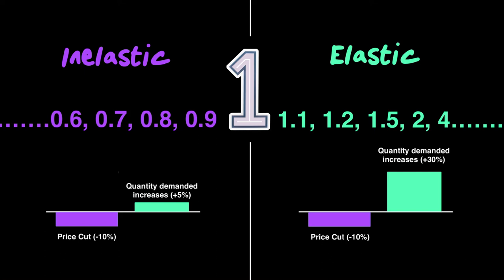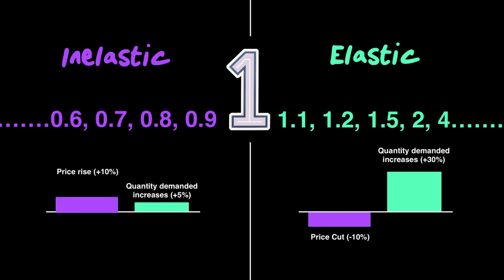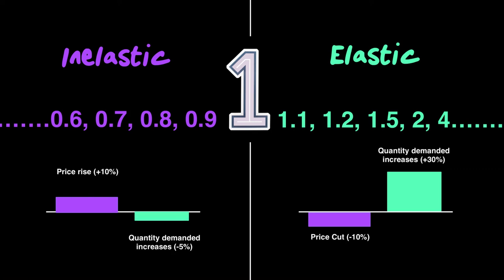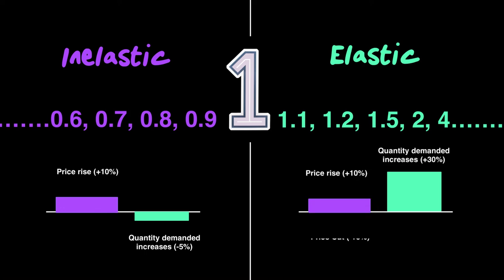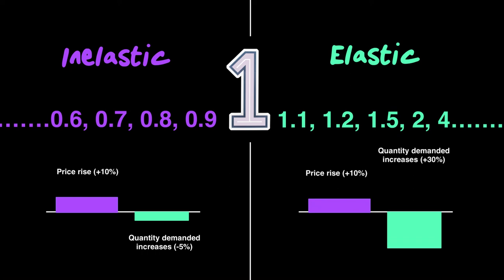For example, with inelastic demand, a ten percent price cut might only bring a five percent increase in quantity demanded. The reverse is also true: a ten percent price increase would only reduce quantity demanded by five percent. Elastic demand is the exact opposite — even a small ten percent price cut brings a much larger change in quantity demanded, such as thirty percent.